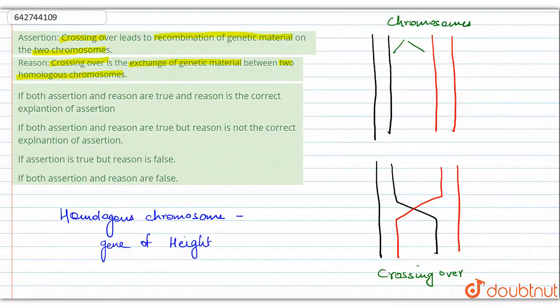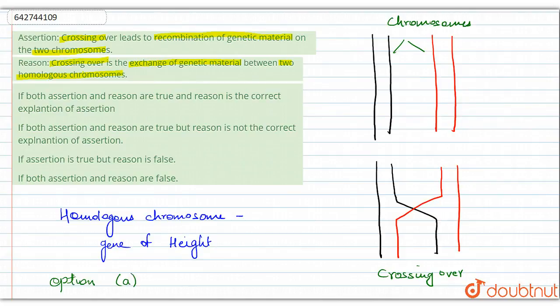Otherwise, how would the chromosomes identify the region where crossing over needs to occur? It is not a random process - it is carried out by the body very specifically. It is a required process. Hence, crossing over is the exchange of genetic material between two homologous chromosomes, and the correct option is option A.